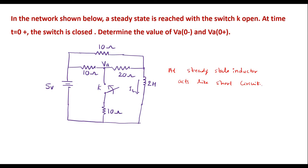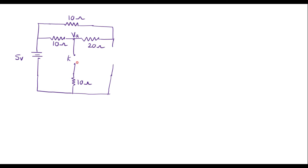Now let me draw the circuit when switch K is open. At steady state, that means at t equal to zero minus, the switch is open. We can see that there is an inductor, and the inductor acts like a short circuit. Assume that the current flowing here is i, the current through this branch is i1, and the current through another branch is i2. When the switch is open, no current flows in the 10 ohm resistor, and the 10 and 20 ohm resistors are in series, which is in parallel with the other 10 ohm resistor.